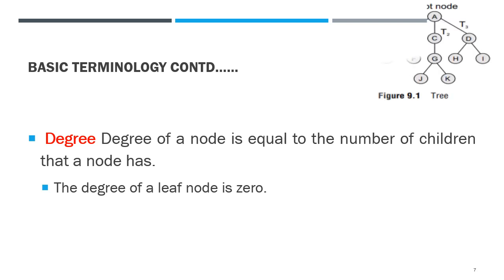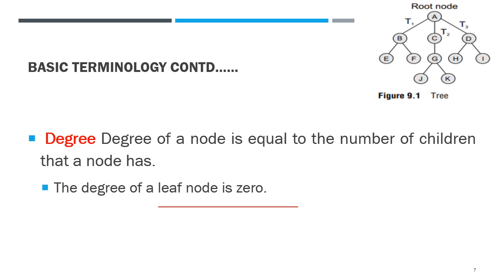Next terminology: degree. The degree of a node is equal to the number of children that a node has. The degree of a leaf node is 0. The degree of A is 3, the degree of B is 2, the degree of C is 1, the degree of D is 2, and the degree of G is 2.